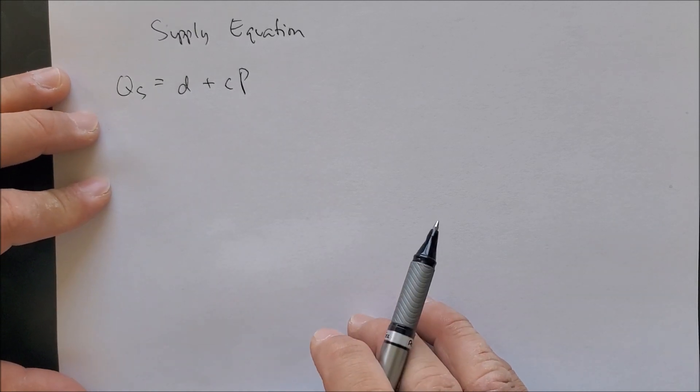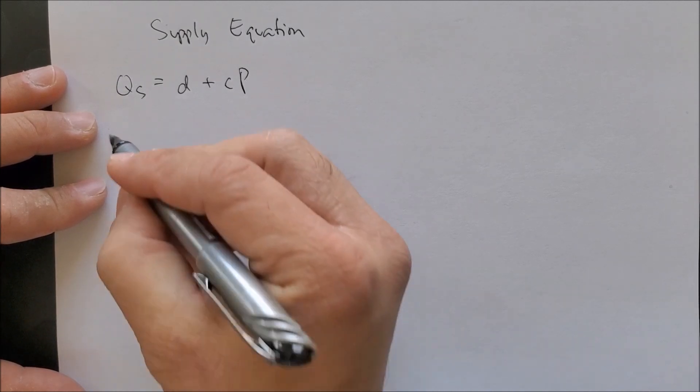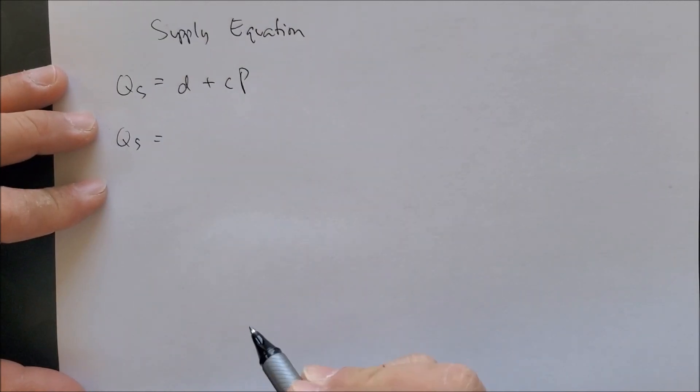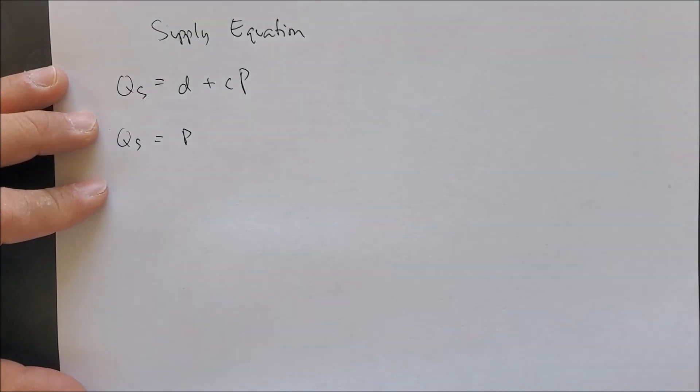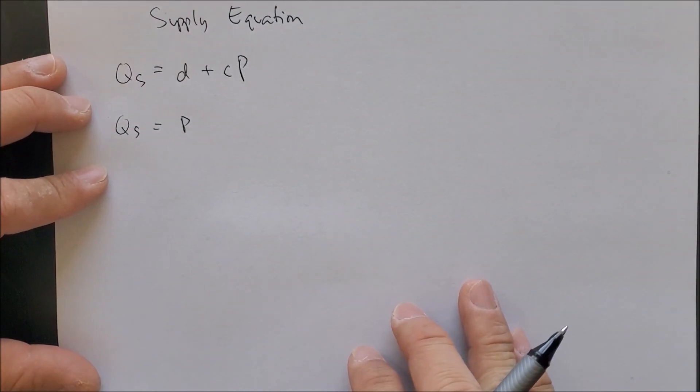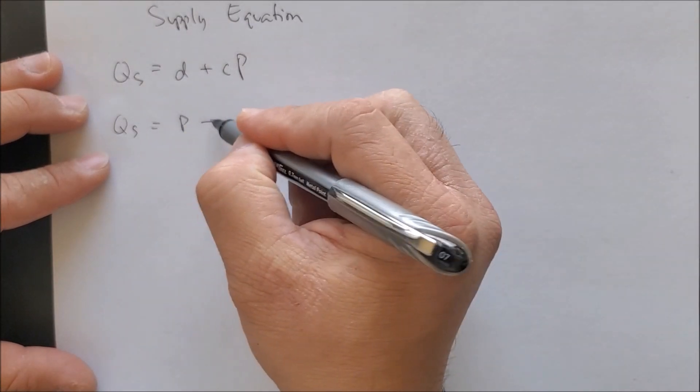Now we could use random numbers to illustrate what we have here. We could put Q sub s equals P. To make this more detailed, this can be plus zero to represent the x-intercept.